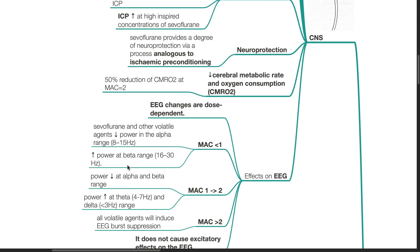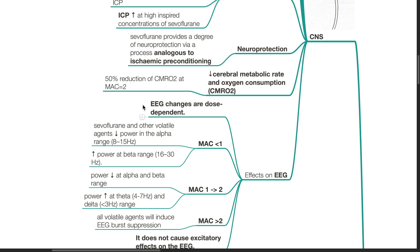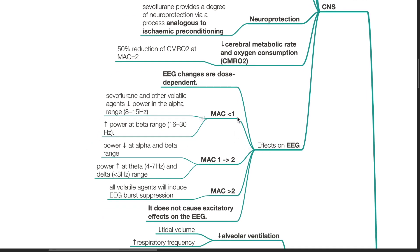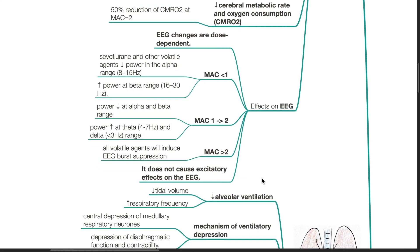Effects on EEG. EEG changes are dose-dependent. When MAC is less than 1, Sevoflurane and other volatile agents decrease the power in the alpha range which is 8 to 15 Hz and increase the power at the beta range at 16 to 30 Hz. When MAC values increase from 1 to 2, the power decreases at alpha and beta range and the power increases at the theta 4 to 7 Hz and the delta less than 3 Hz range. When MAC is more than 2, all volatile agents will induce EEG burst suppression. Sevoflurane does not cause excitatory effects on EEG.